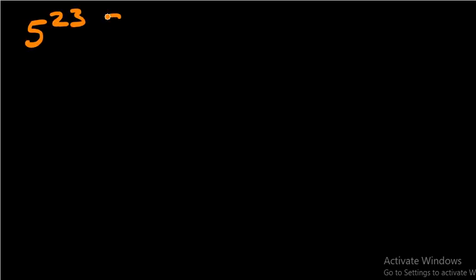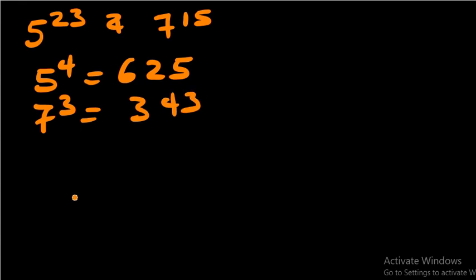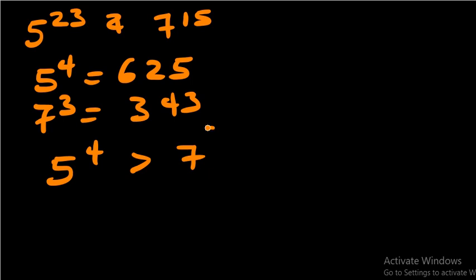Proceeding to the second method: we are again trying to compare five to the power of 23 and seven to the power of 15. Five to the power of four equals 625 — this is a well-known value. Seven cubed is also known, which is 343. Since 625 is greater than 343, we can say five to the power of four is greater than seven to the power of three.